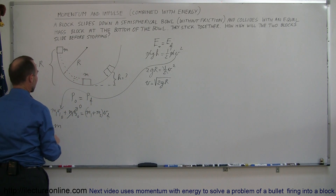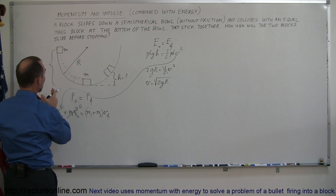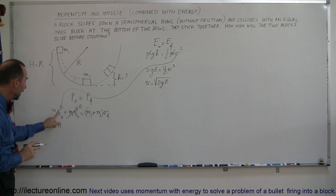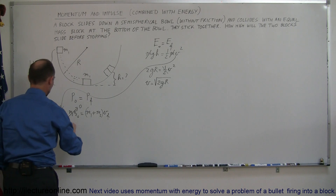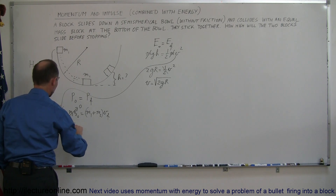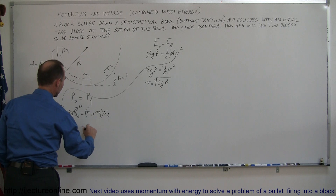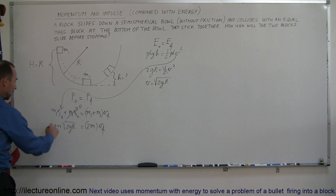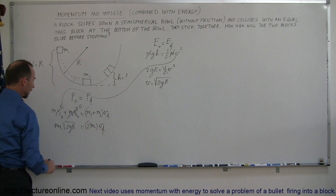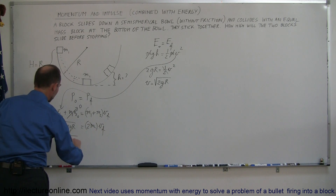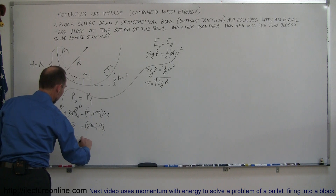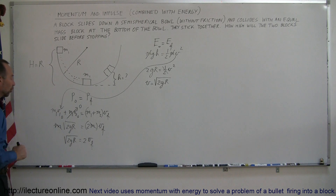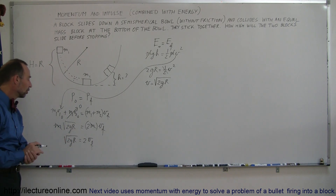We can write that m times the initial velocity, which is the square root of 2gr, equals the sum of the two masses, which is 2m times v final. Since m1 equals m2, we just call it m. We can cancel out an m on both sides, giving us the square root of 2gr equals 2 times v final. So v final can be expressed in terms of the square root of 2gr.